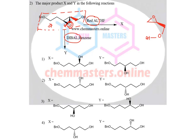Before going to give the transition state here, do you know the structure of Red Aluminium? This is the structure of Red Aluminium, which contains two hydrogens and with branches — this is a bulky branch, a bulky branch, CH₃. It is the structure of Red Aluminium.